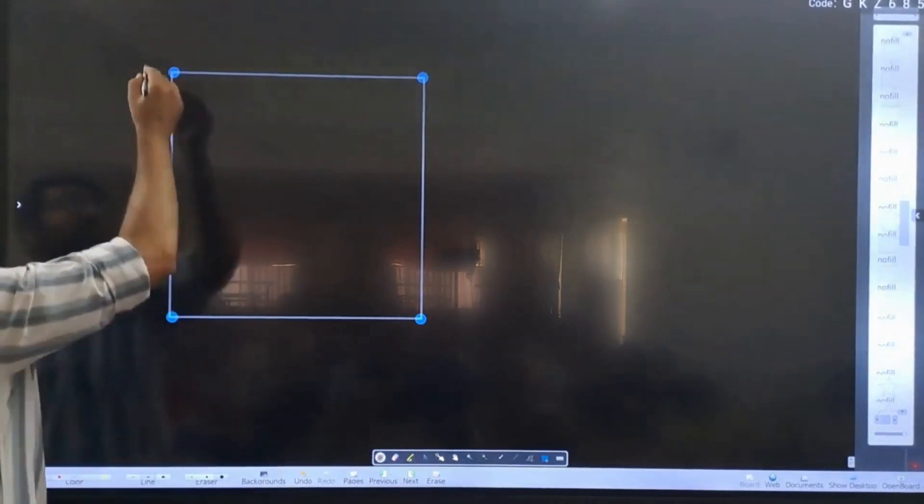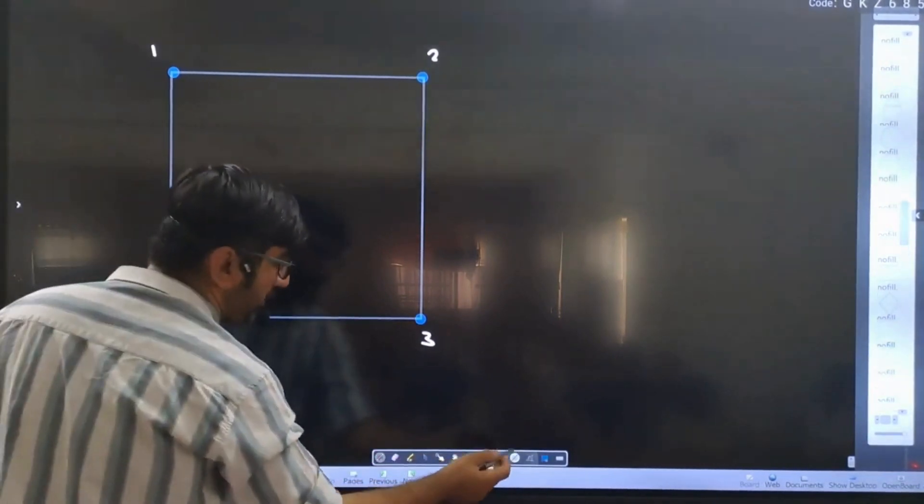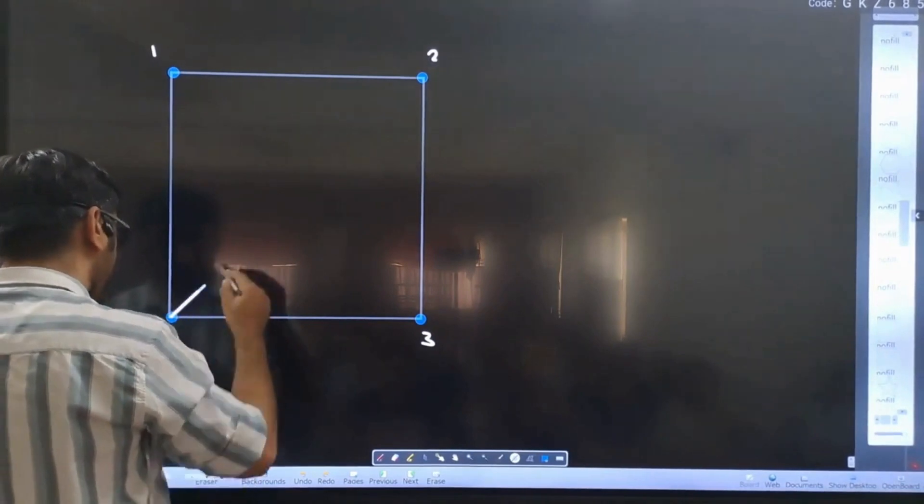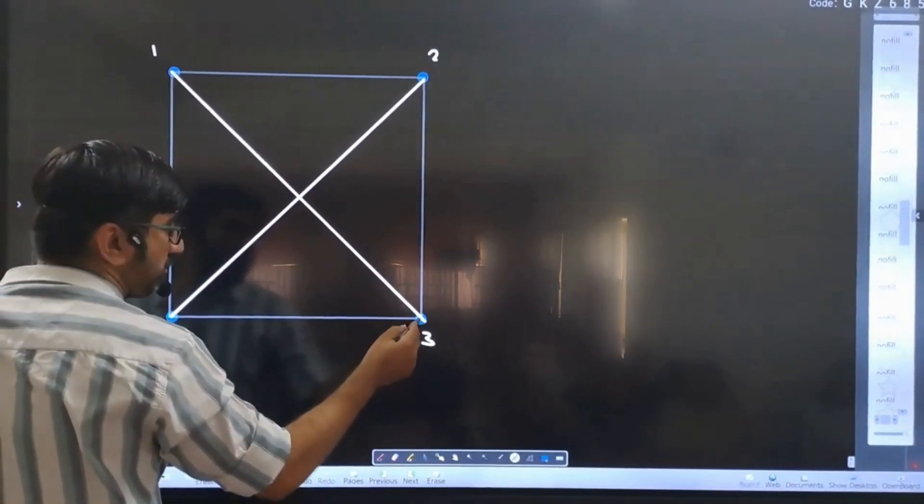So I will label this one as 1, this is 2, this is 3, this is 4. You will know that the center of the square is where the diagonals meet. The point of intersection of diagonals is center of the square.